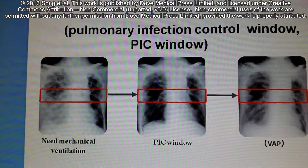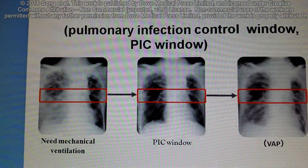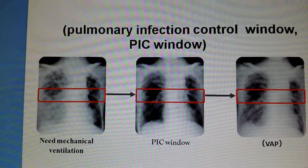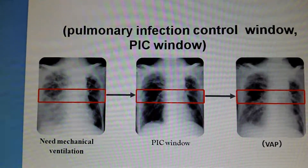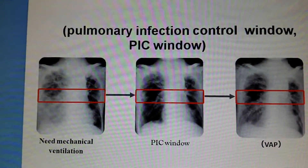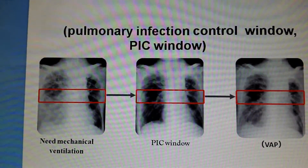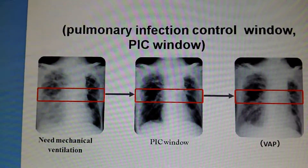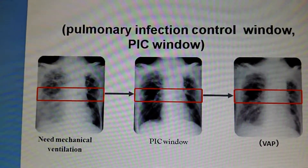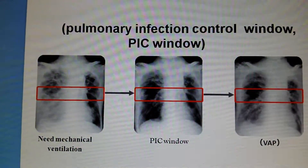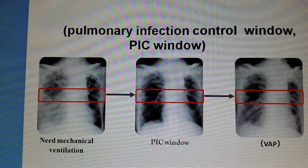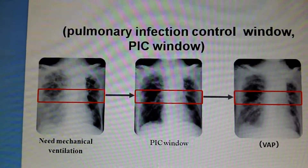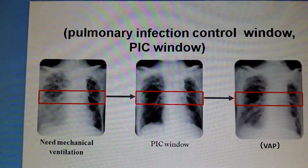If patients are severe enough and need to be intubated, once pulmonary infection gets controlled, the patient should be extubated even if respiratory failure has not been fully recovered, and non-invasive ventilation could be sequentially implemented to prevent respiratory failure but also avoid potential ventilator-associated pneumonia. The timing that allows the patient extubation without increasing re-intubation rate is called pulmonary infection control window.